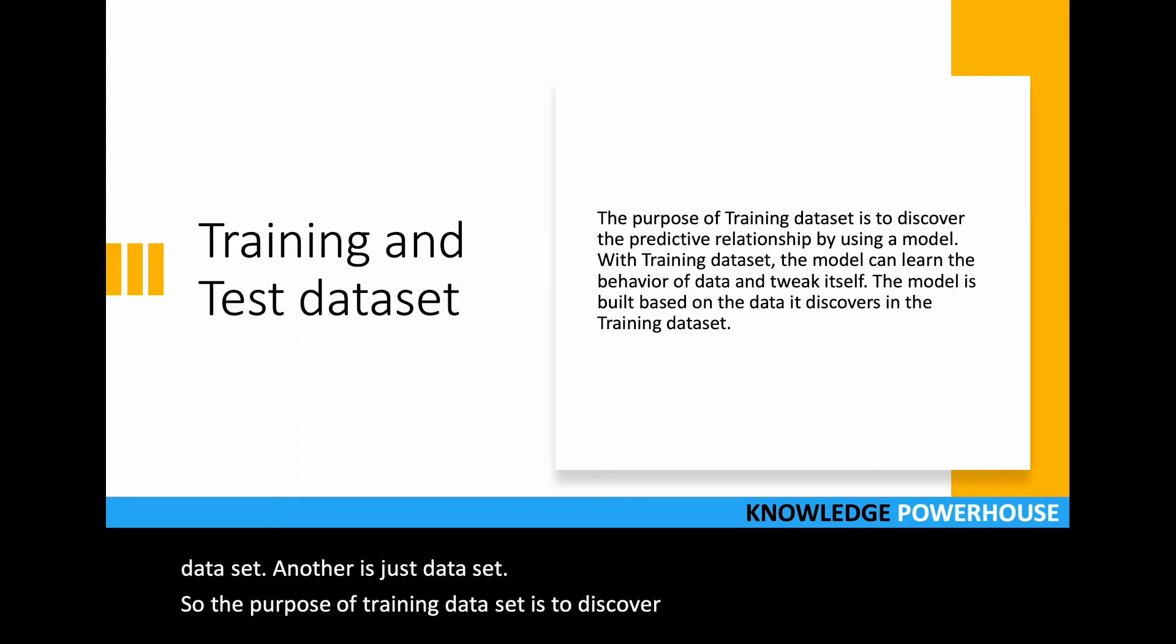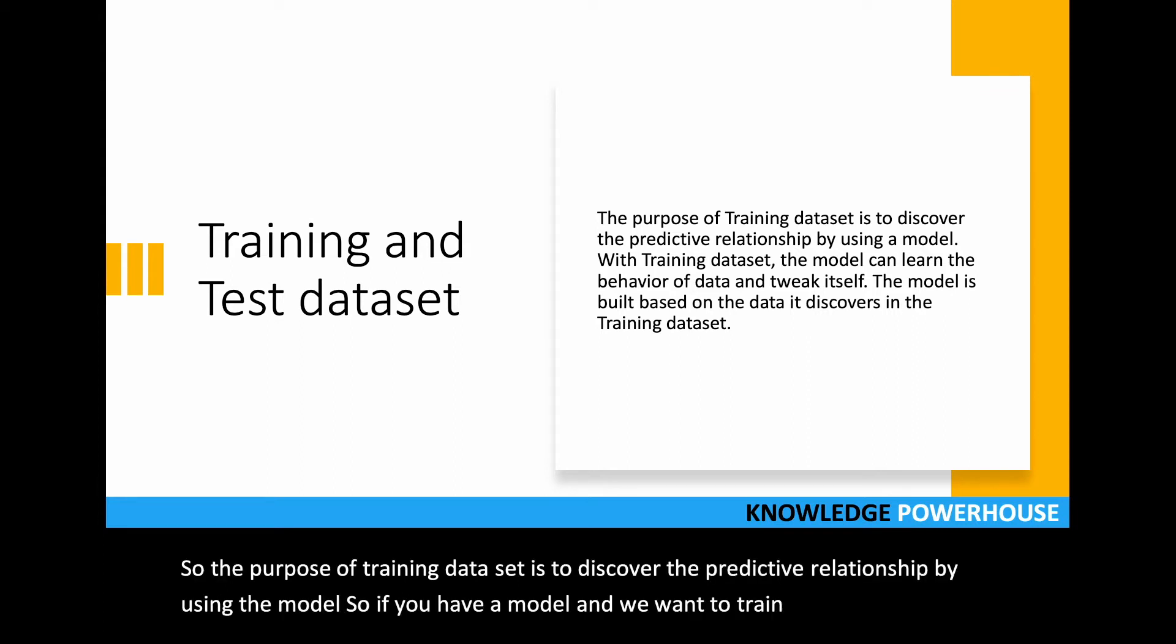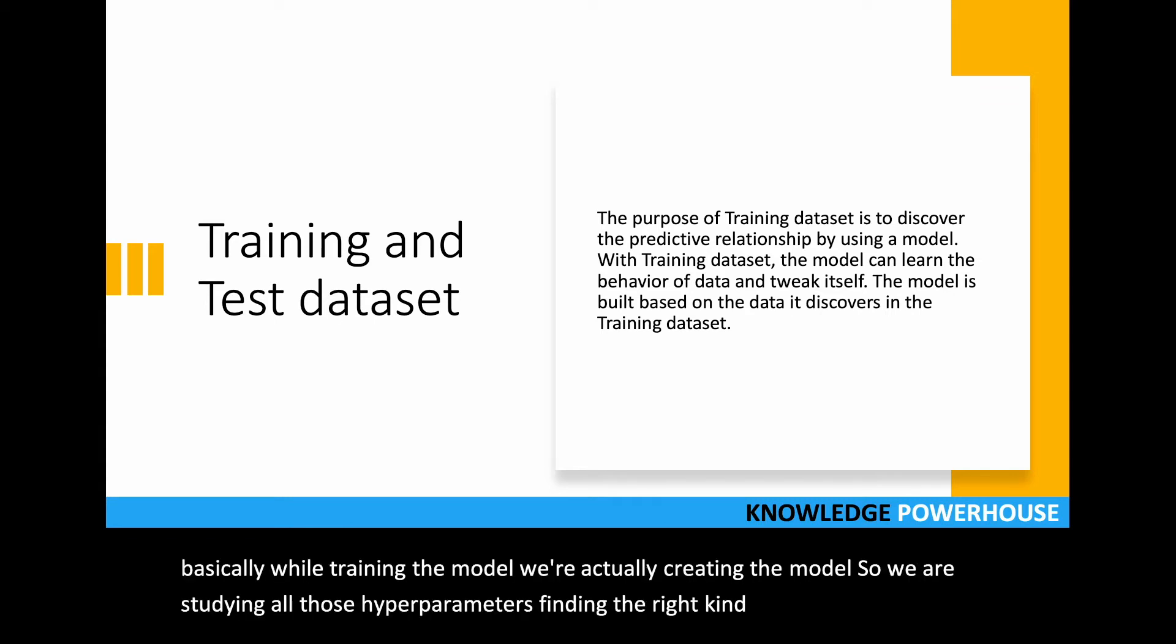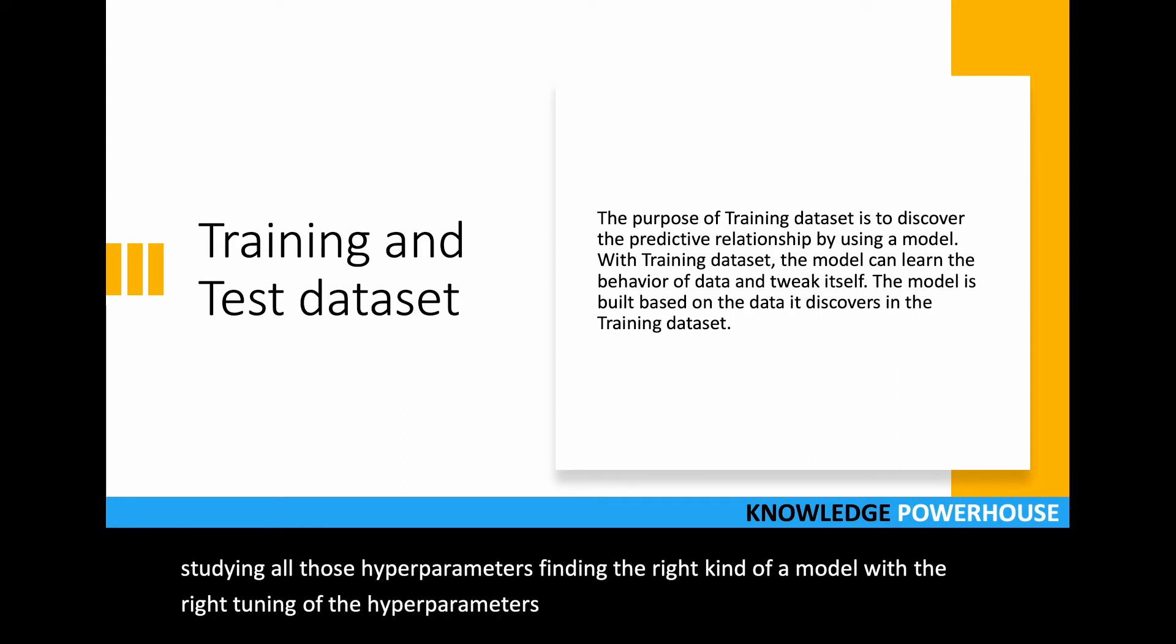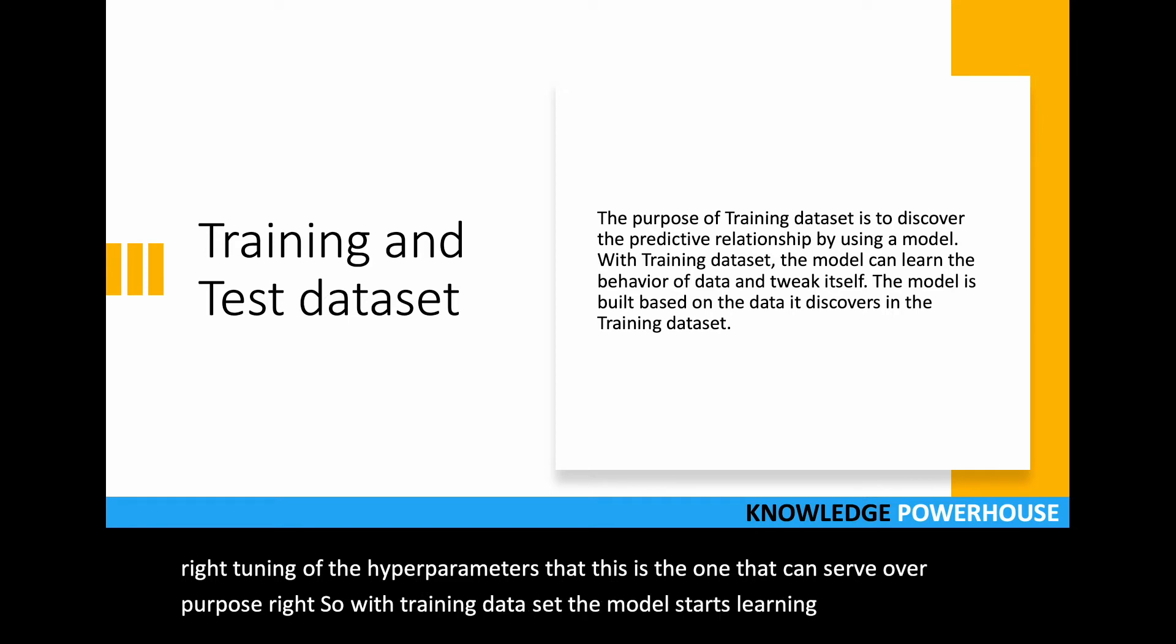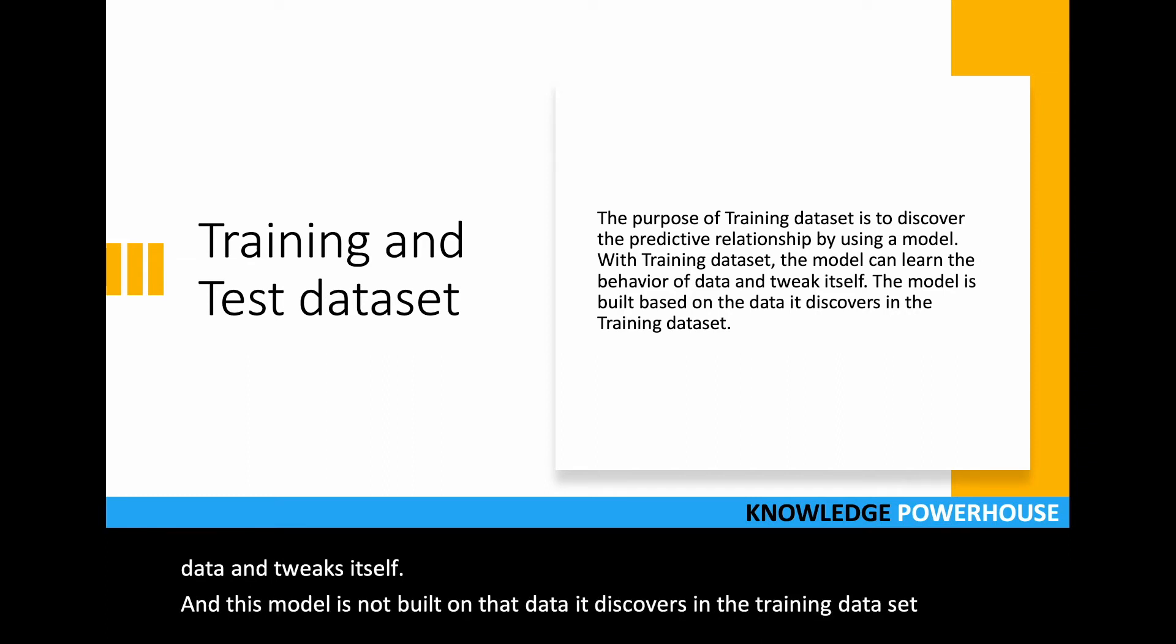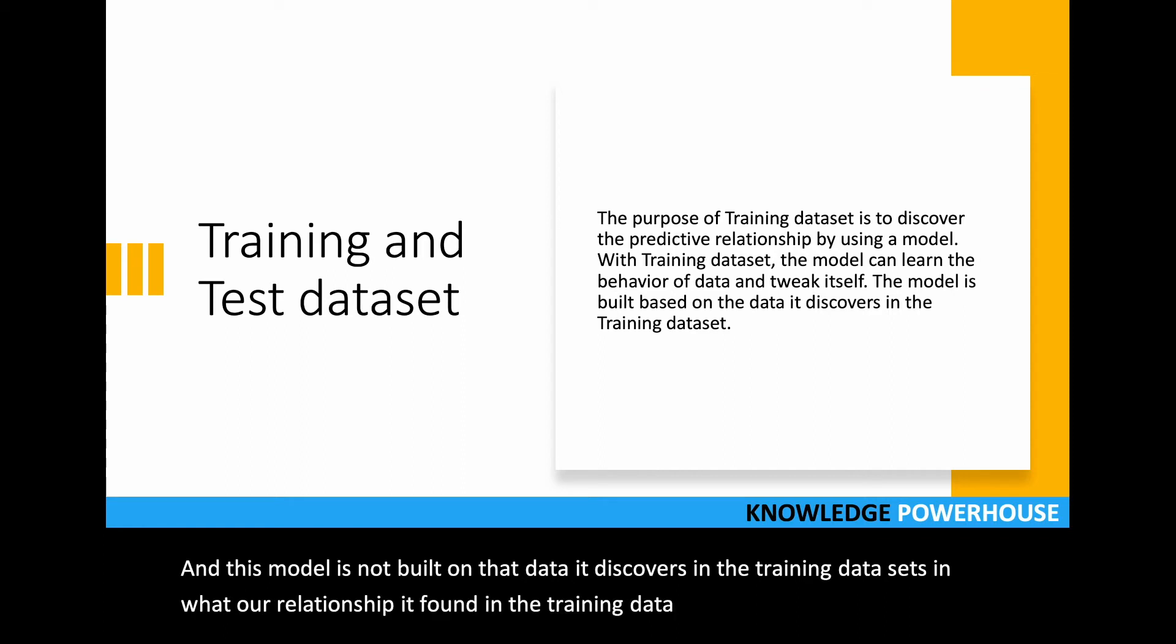The purpose of training dataset is to discover the predictive relationship by using the model. While training, we're actually creating the model, studying hyperparameters, finding the right model with the right tuning. With training dataset, the model learns the behavior of data and tweaks itself. This model is built on the data it discovers in the training dataset. Whatever relationship it found in the training data, based on that the model was built.